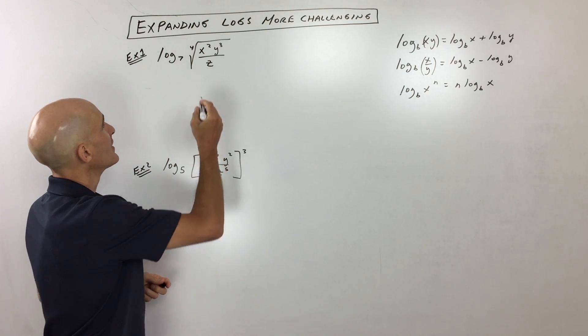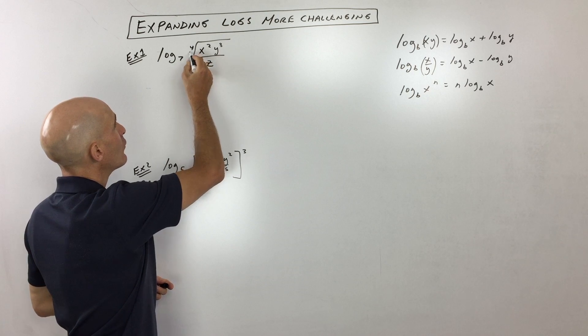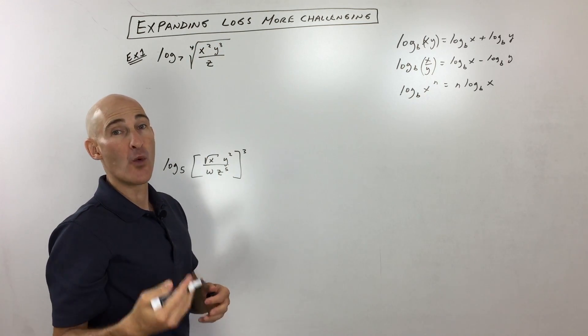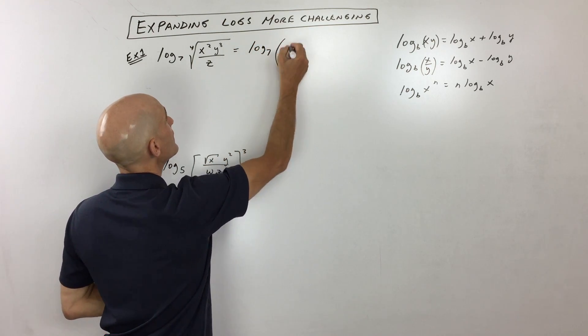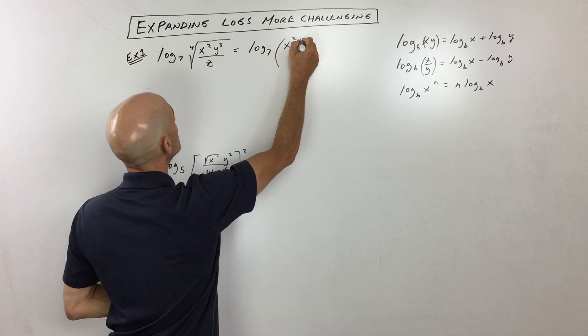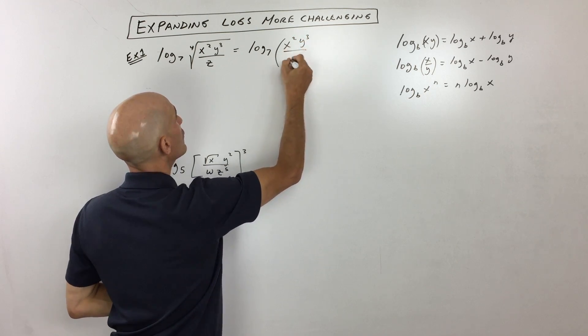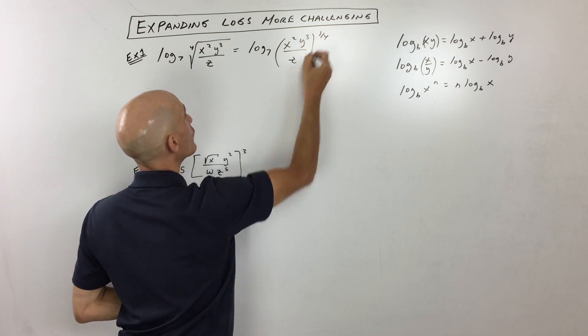The first thing you can think of is when you have the fourth root, that's really like the one-fourth power. So let me write that a little bit differently. Log base seven, x squared, y cubed over z to the one-fourth power.